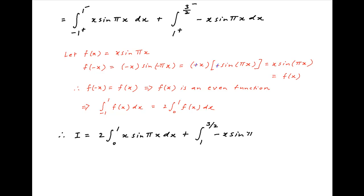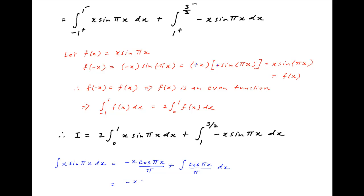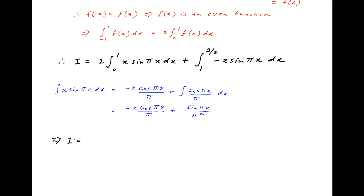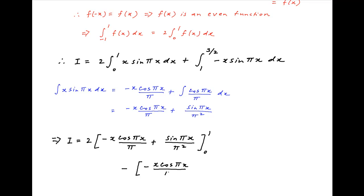Therefore the first term can be written as 2 times the integral from 0 to 1 of x·sin(πx) dx, and the second term is the integral from 1 to 3/2 of -x·sin(πx) dx. We integrate by parts to evaluate the integral of x·sin(πx) dx. This equals x times (-cos(πx)/π) minus the integral of (-cos(πx)/π) times 1, which simplifies to -x·cos(πx)/π + sin(πx)/π². Using this result, I equals 2[-x·cos(πx)/π + sin(πx)/π²] from 0 to 1, minus [-x·cos(πx)/π + sin(πx)/π²] from 1 to 3/2.